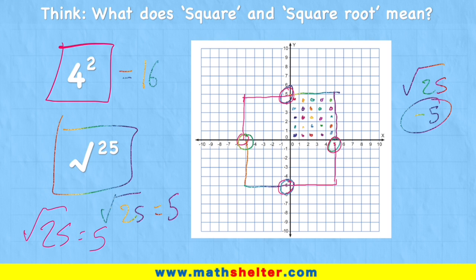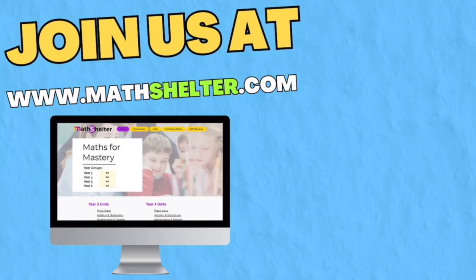But that's essentially it. That is what squaring and square rooting means. Have a little practice yourself at squaring some numbers and then try and find the square root of them. Hopefully this video was helpful for you. If it was, join us over at themathshelter.com where you're going to find loads more videos to help you with everything you need to know about your age group's maths. But for now, guys, I'm going to see you in another video. Peace out.